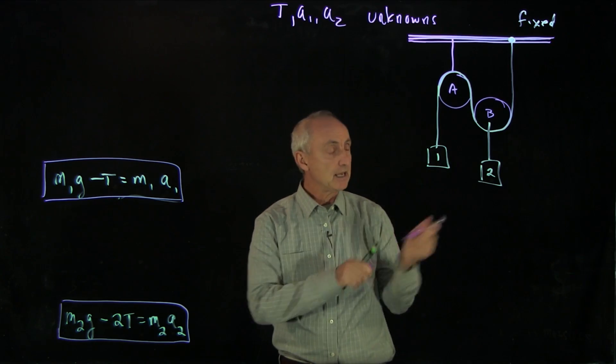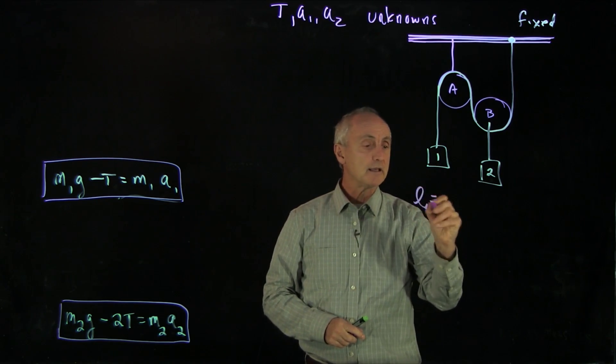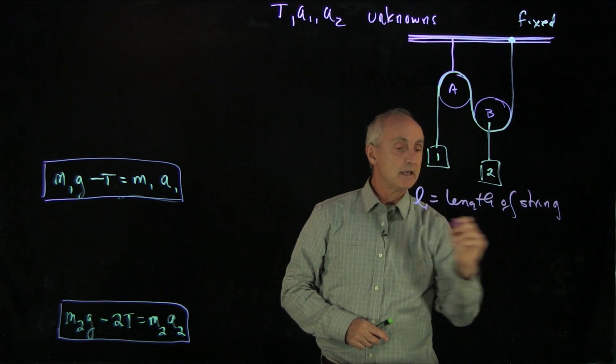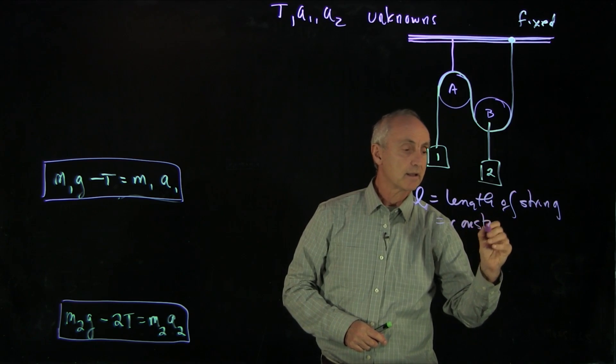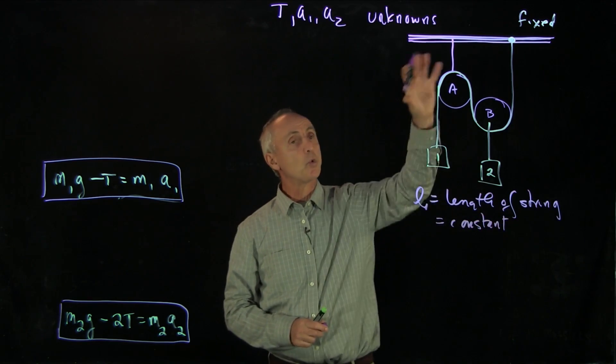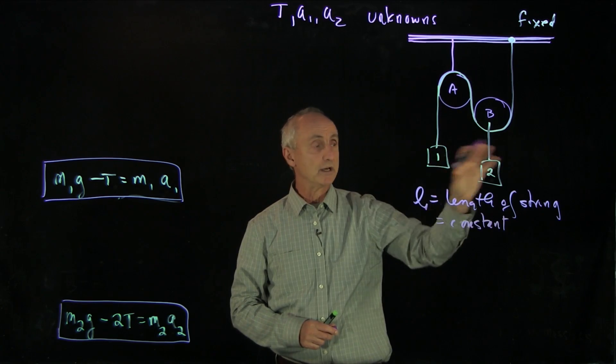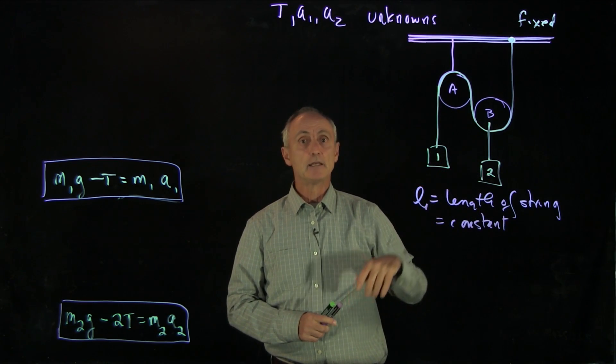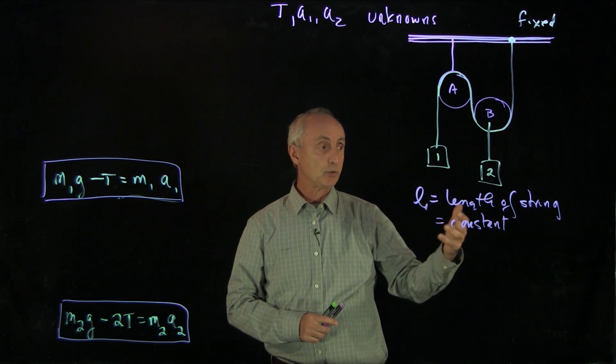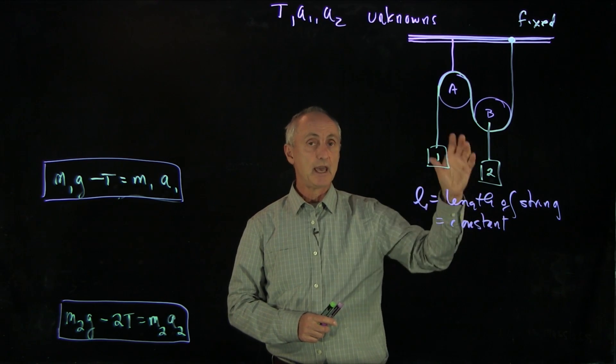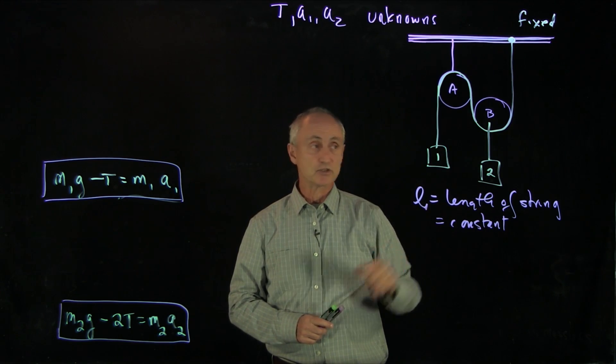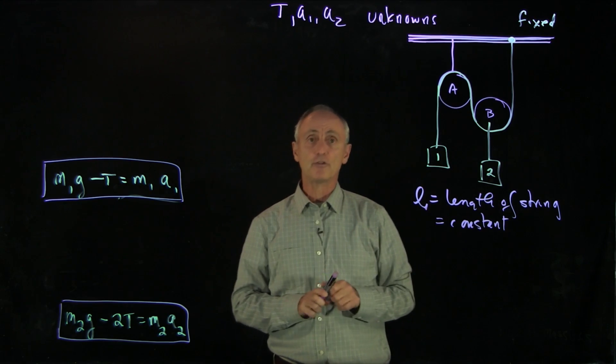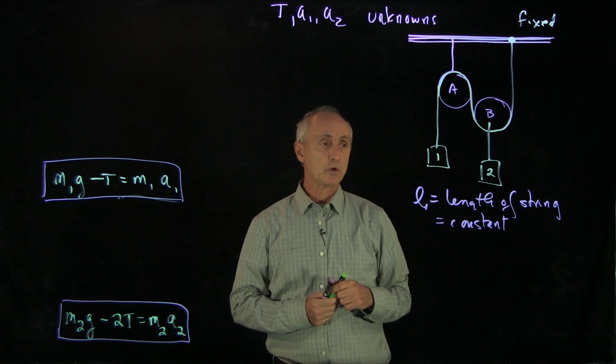The way we think about it is that we'll call L equal to the length of the string, and this quantity is a constant. What we'd like to do is introduce coordinate functions for our object 1 and our object 2, express L in terms of those coordinate functions, and then take two derivatives of L, set that equal to 0 because it's a constant, and that will give us a relationship between the accelerations of objects 1 and 2. Now, this is a little bit tricky, and so what we want to do is very carefully show how we introduce coordinate functions.